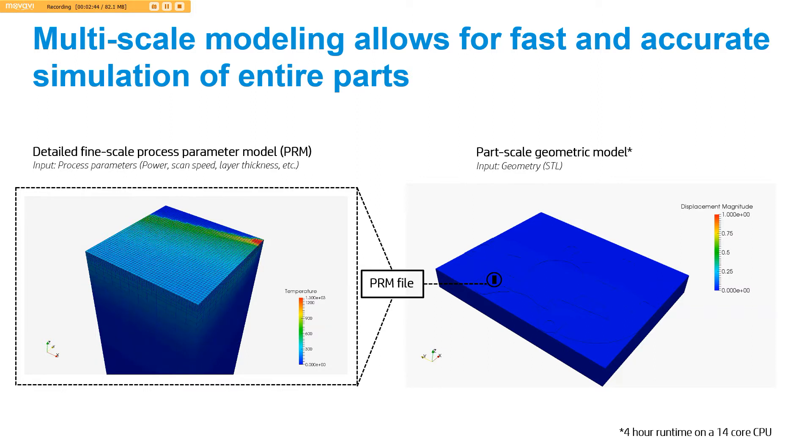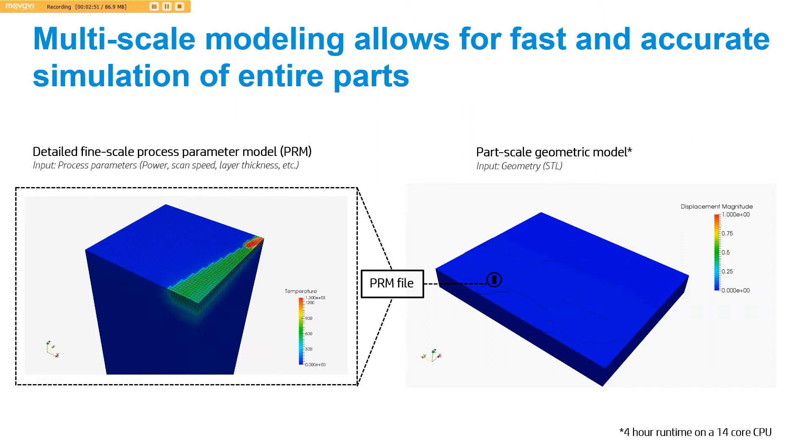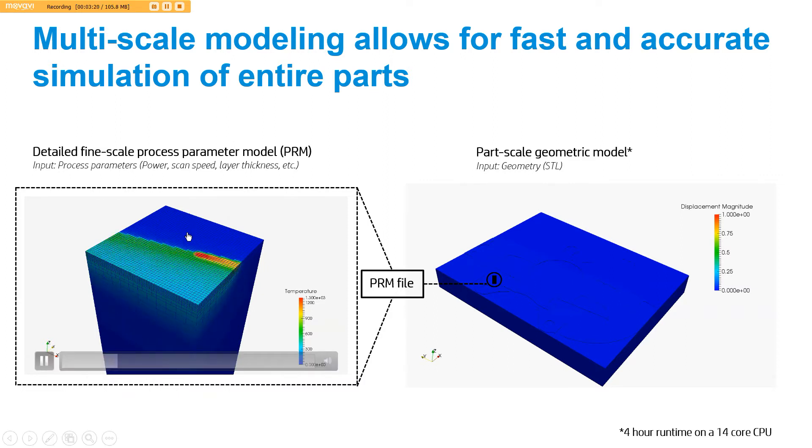If I'm depositing TI-64 in an EOS machine using the performance settings, I would put in the material properties for TI-64 and input the power, scan speed, layer thickness that EOS uses at their performance settings. What we're going to get from this scale is an understanding of how a particular material thermally and mechanically responds to a particular machine parameter setting, and an understanding of how the individual layers mechanically interact with one another. Once we understand that for this combination of material and parameters, we're going to store that information in something we call a process parameter file or PRM file for short.